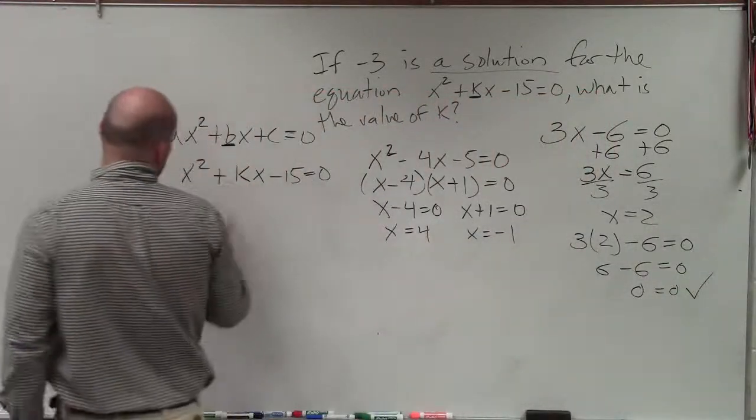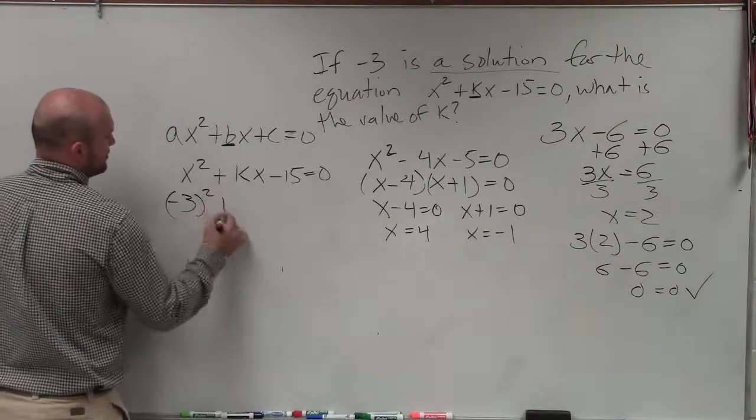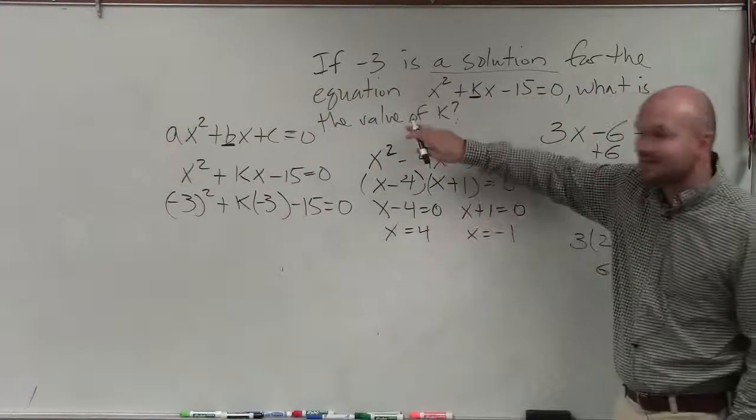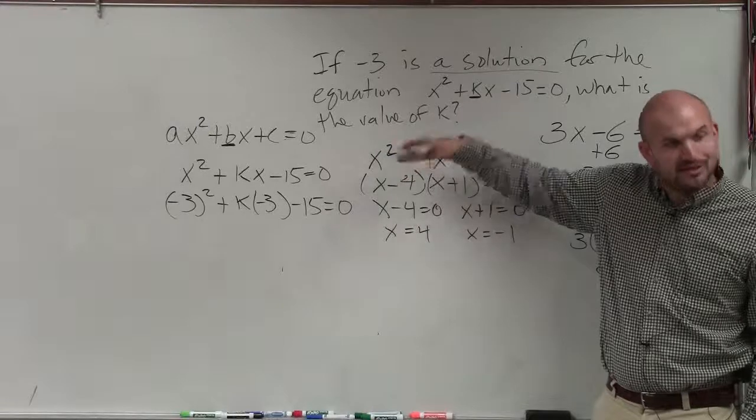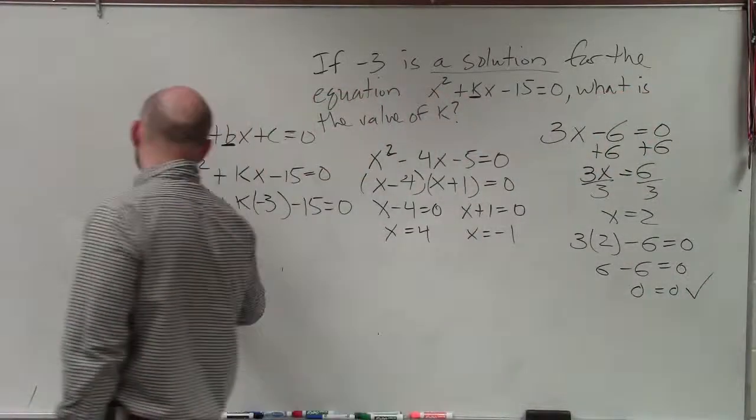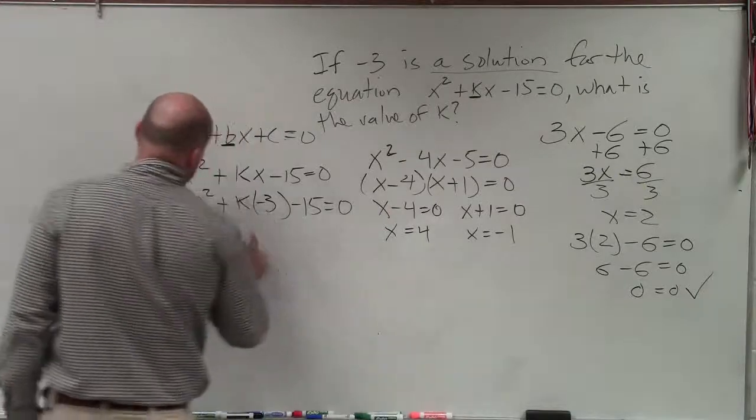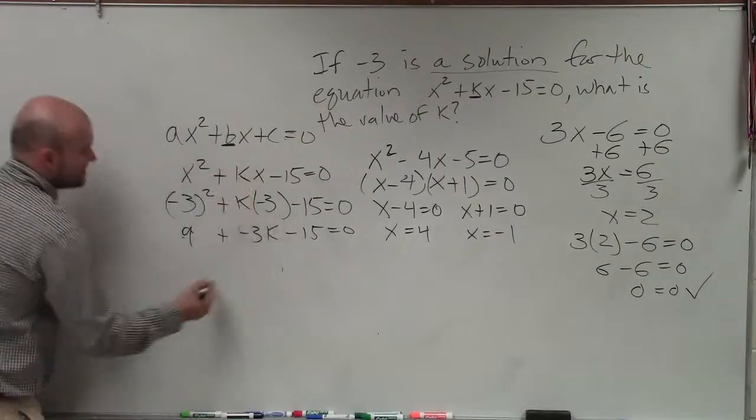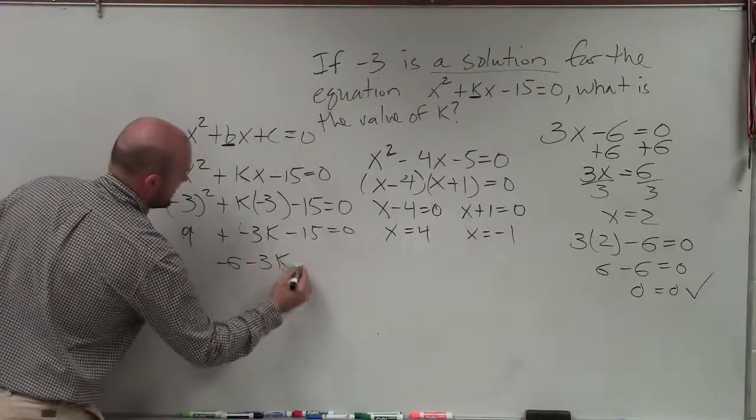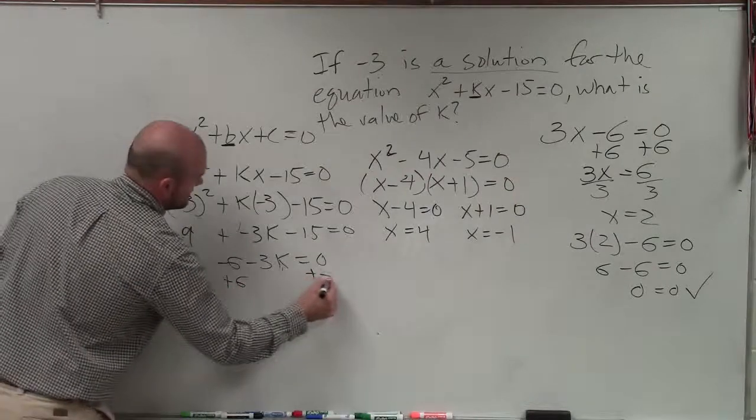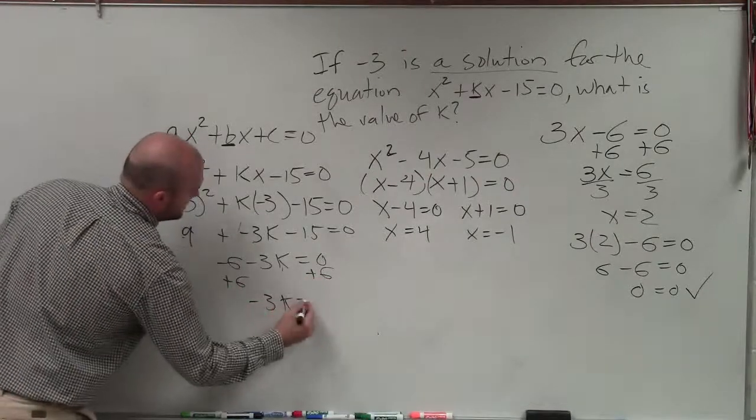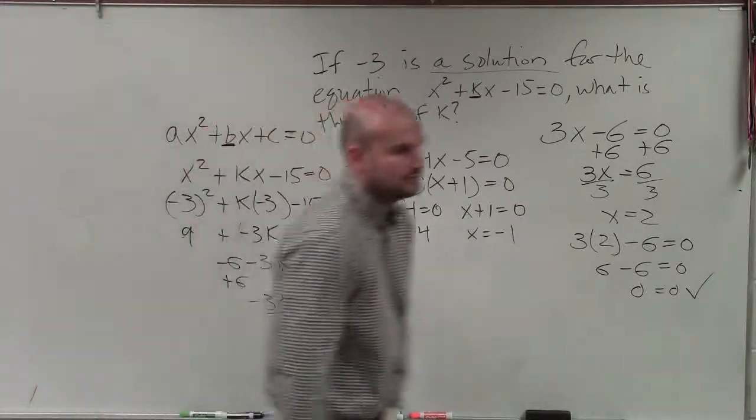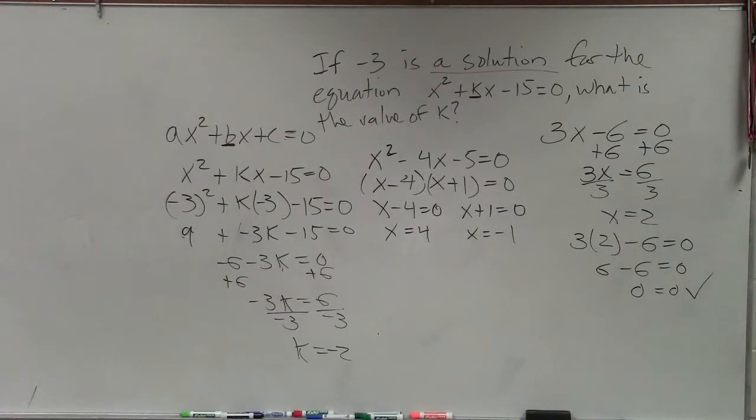So therefore, now I go ahead and, so now I just plug in negative 3 in for x. And what I'm trying to do is find the value of k. Is that what they're asking when I plug that in? Yes, that's all they're asking. OK, so therefore this becomes 9 plus negative 3k minus 15 equals 0. 9 minus 15 is negative 6 minus 3k equals 0. Add 6, add 6. Negative 3k equals 6. Divide by negative 3, divide by negative 3. K equals negative 2. So that is your final answer.